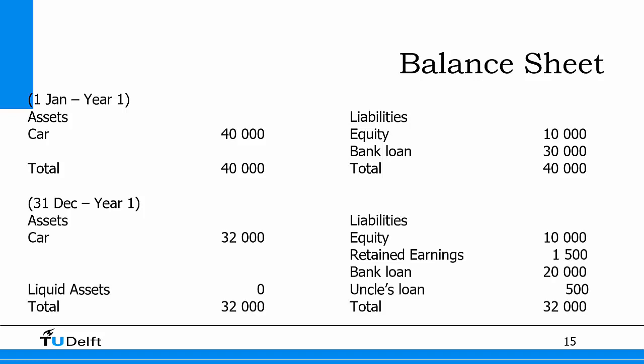After year one, the balance looks different. The car has been depreciated by 8,000, so it's now worth 32,000. Cash is zero, giving a total of 32,000 on the asset side. On the liability side, equity remains 10,000 plus retained earnings of 1,500 profit. The bank loan dropped from 30,000 to 20,000 after repaying 10,000. The uncle's loan adds 500. The total liabilities also equal 32,000 — the two sides of the balance sheet always match.